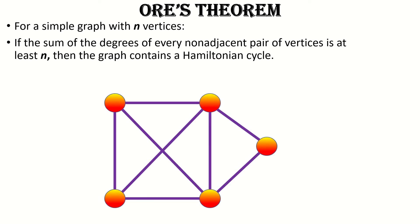Here's an example of a graph that, by Ore's theorem, contains a Hamiltonian cycle. It has five vertices, and notice that no matter which pair of non-adjacent vertices you choose, and there are only two of them, the sum of their degrees is greater than or equal to 5, the number of vertices in the graph. Here is one Hamiltonian cycle in this graph.